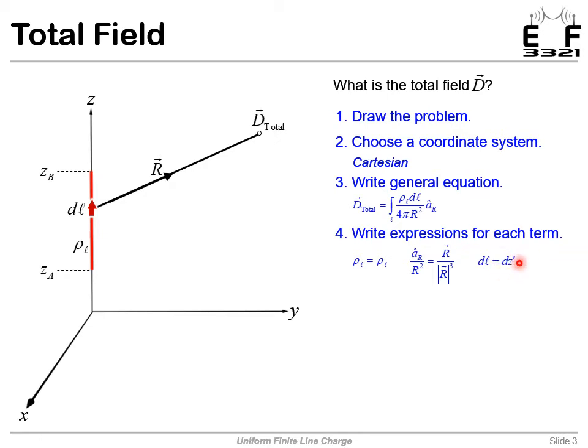Notice we're writing this as a dz prime. And that's because we really have two z's at work here. We have the z, which is the height of our observation point. And we also have the z integrating along the length of the charge. So to tell our z's apart, we'll put z prime as the position of z along the charge, not to be confused with the position z of where we're observing the field.